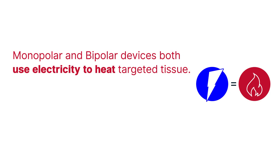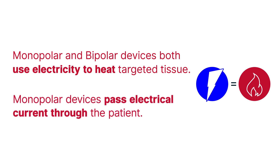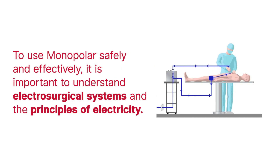Monopolar and bipolar devices both use electricity to heat targeted tissue. Whereas bipolar devices pass electricity only between the jaws of the device, monopolar devices pass current through the patient. To use monopolar safely and effectively to heat, coagulate, and cut tissue, it is important to understand both electrosurgical systems and the principles of electricity.